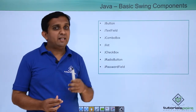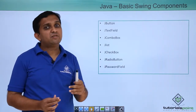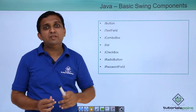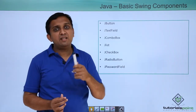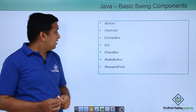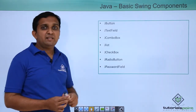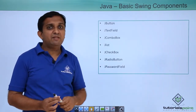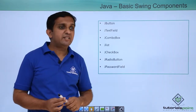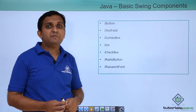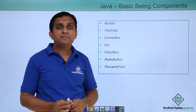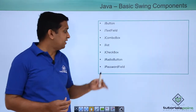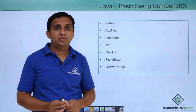JList is there, similar to combo box in that multiple elements are available, but you can select more than one element. In combo box, you can select only a single element. Checkbox is there. Radio button is there — if yes or no are the options, you choose either one; that is a radio button. JPasswordField is there — if you enter a password, it should not be displayed, and that is handled by the password field component.